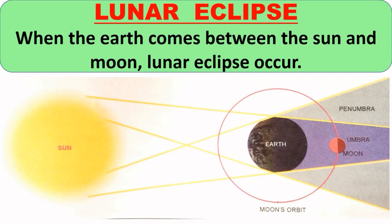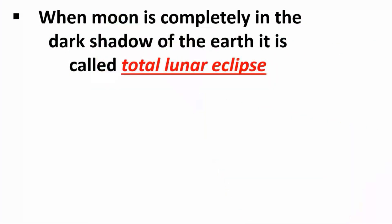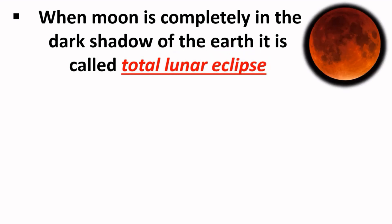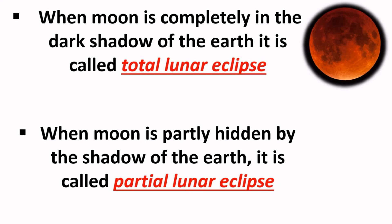As you can see in this picture, the innermost and the darkest part of the shadow where the light source is completely blocked by the earth is known as Umbra. Penumbra is the outer region of the shadow cast by the earth. We can notice two types of lunar eclipse: total lunar eclipse and partial lunar eclipse. When the moon is completely in the dark shadow of the earth it is called total lunar eclipse, and when the moon is only partly hidden by the shadow of the earth it is known as partial lunar eclipse.